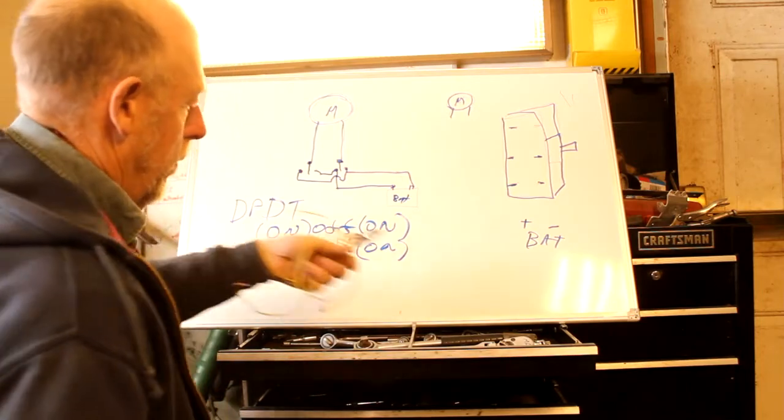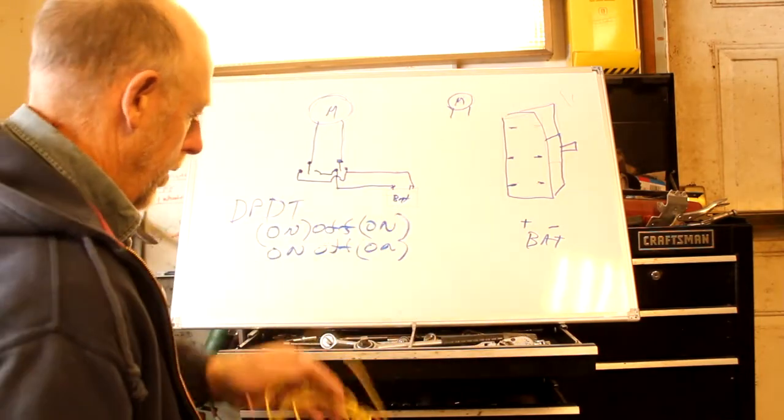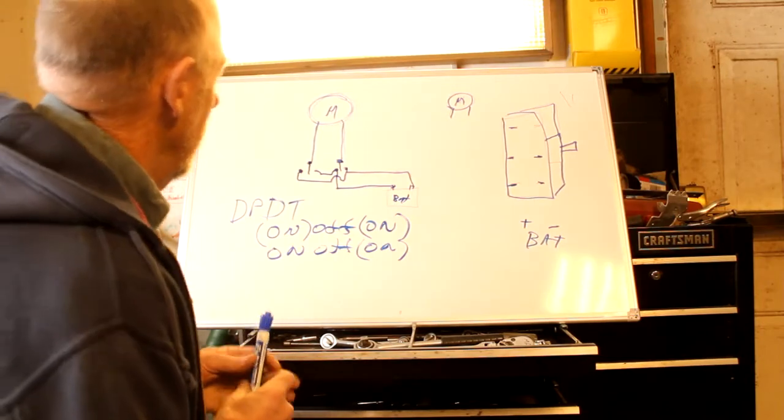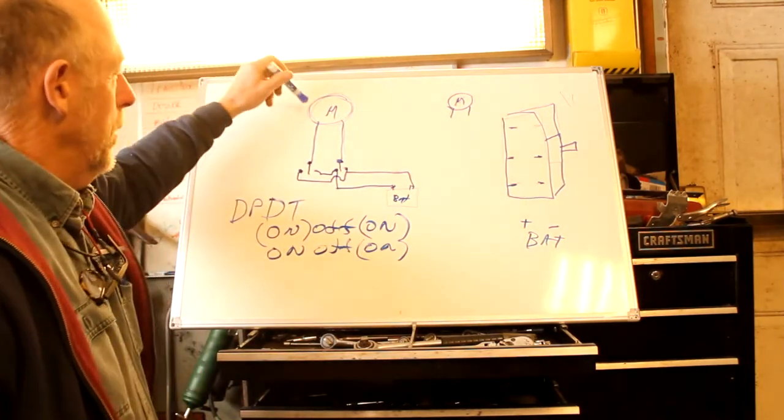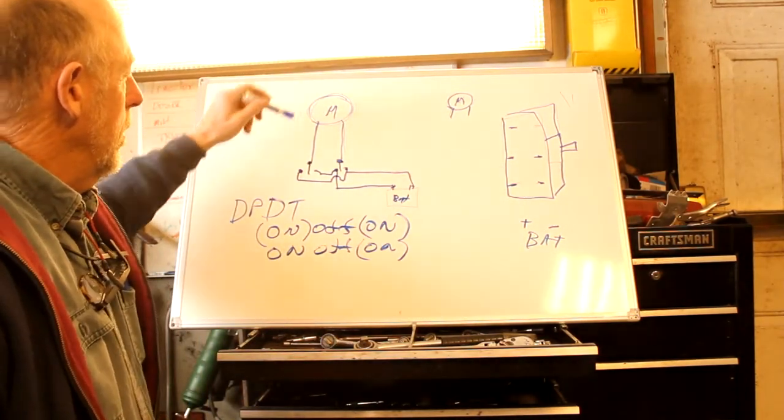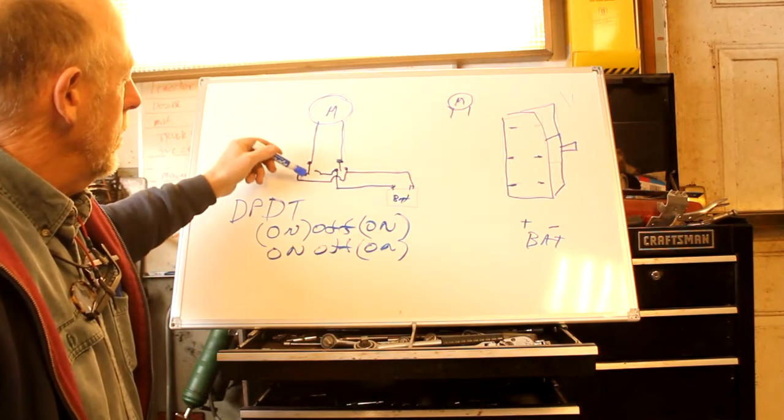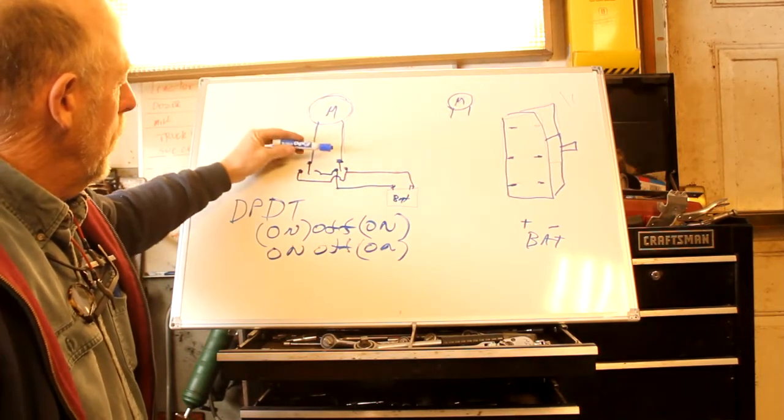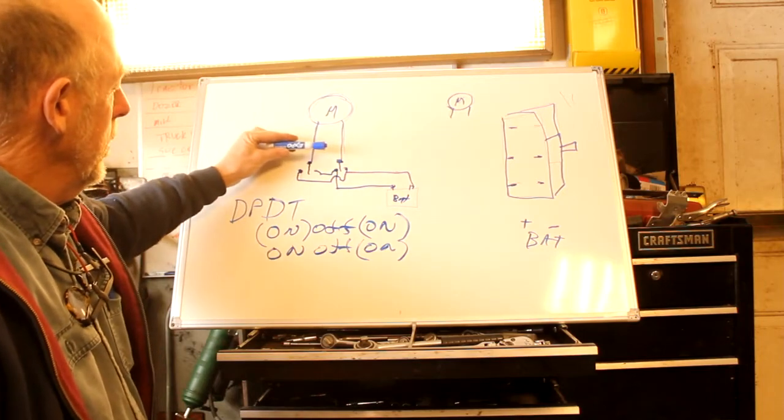So we'll go over real quick how to wire it and then I'll tell you how it works. This is a schematic. Here's the motor. Here's the two switches. See in the center they're off, and when they go to both they both switch together one side or the other.